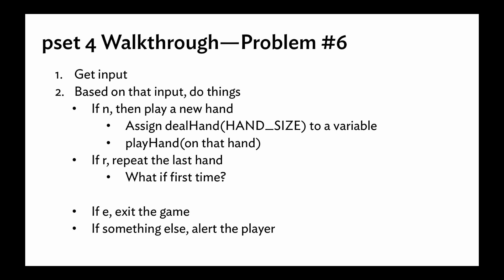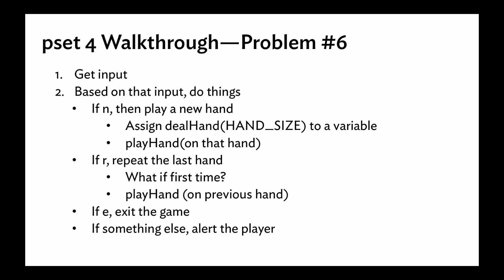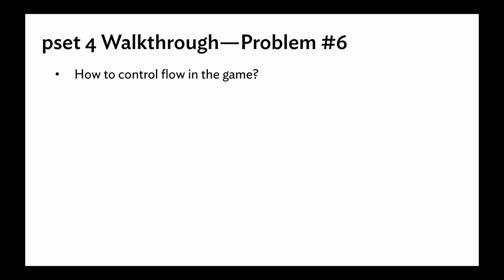It gets a bit trickier if the user puts in R. The reason it's tricky: what if it's the first time the person decided to play and they say repeat? There's nothing to repeat yet. In that case you have to send an error saying hey, you haven't played anything yet. That should also trigger in your mind — how are you going to know if they've played something? How are you going to keep track of that? If they do choose R and have played a hand already, then you play that hand using play_hand, but on the previous hand, not a new one.